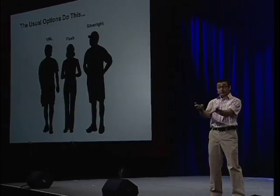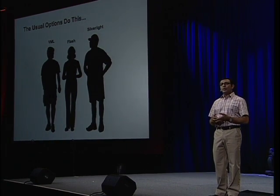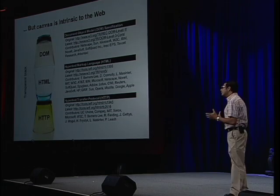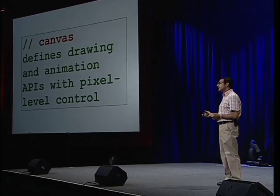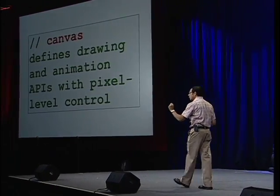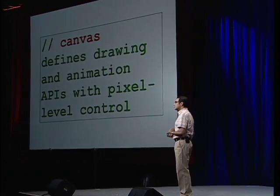Some of you might say: just use VML, Silverlight, or Flash. And you're right — those approaches could work. But what if we wanted something that was part of the open, transparent Internet that we know and love? That's exactly what Canvas is. The Canvas tag is intrinsic and native — it fits seamlessly into the page and works great with JavaScript, CSS, and the DOM. Canvas allows you as a developer, for the first time within the browser, to have drawing and animation APIs with pixel-level control, which changes the kind of applications we can deliver.